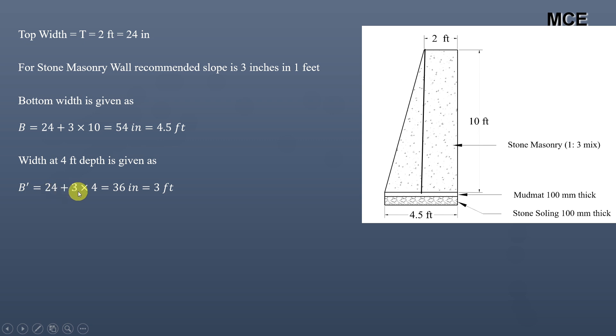The width at 4 feet depth from the top = 24 + 3 × 4 = 36 inches or 3 feet. So that is how you design a PCC or stone masonry retaining wall: if you know the top width, the wall height, and the minimum recommended slope, you can calculate the bottom width at any depth. I hope this solution video was clear and effective. If you have any doubts, write them in the comments. Thanks for watching Master Civil Engineering — stay tuned!